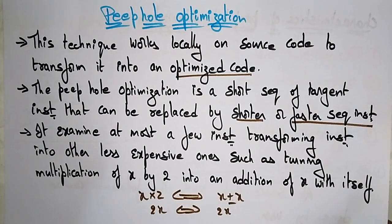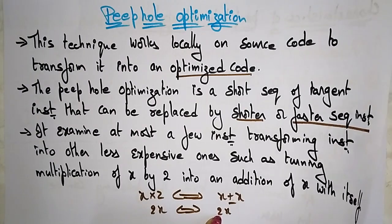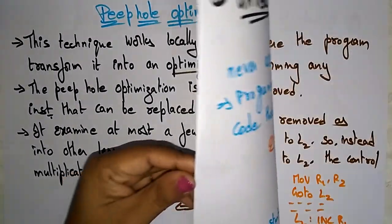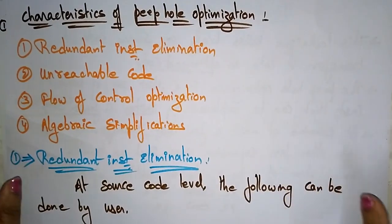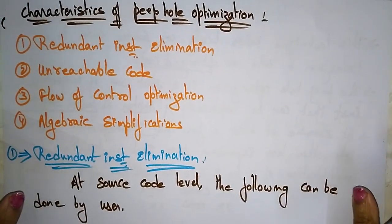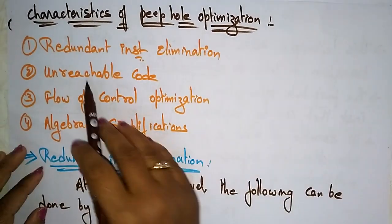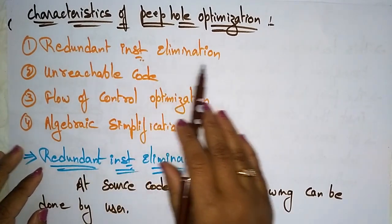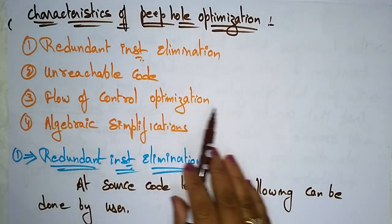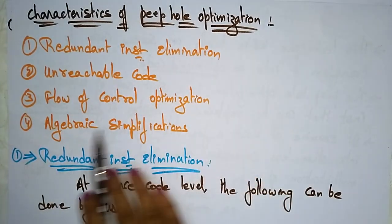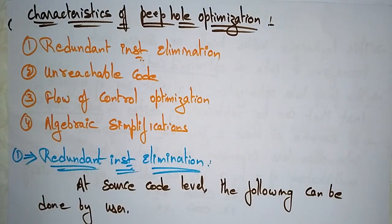Now let's see the different characteristics of peephole optimization: redundant instruction elimination, unreachable code, flow of control optimization, and algebraic simplification. Each characteristic concentrates on reducing instructions and using less expensive variables or operators.